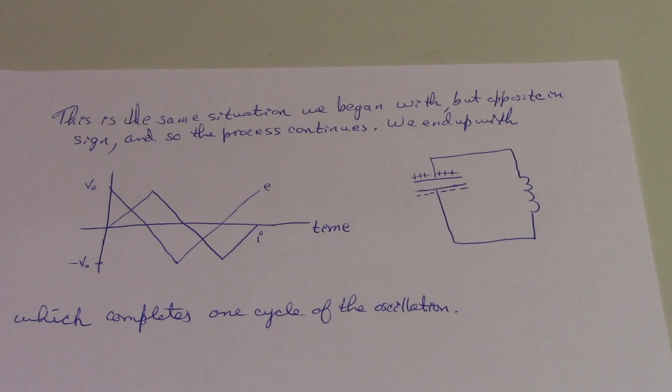So this is the qualitative picture of the charge of flow in the circuit. We'd like to learn more about the process, for example, how the current changes in time, and how fast this cyclic process occurs, and we can do that by adding a bit of math.